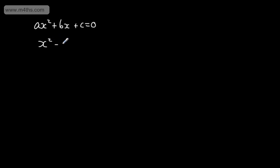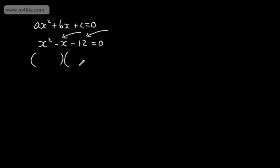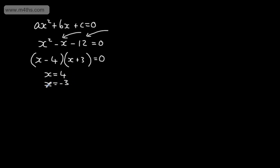An example might be X squared minus X minus 12 is equal to zero. We've got the X squared, the X and the constant term, so it followed this particular form. We found two numbers that multiplied to give the C term, which is negative 12, and added to give the B term, which is negative 1. We then set up the brackets equal to zero. The two numbers that multiplied to give negative 12 and add to give negative 1 would be X minus 4, then X plus 3 equal to zero. So from this, we saw that X was either equal to 4 or X was equal to negative 3.